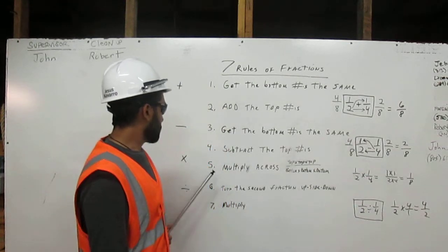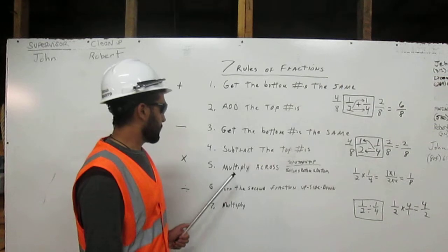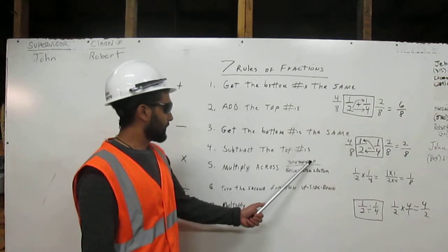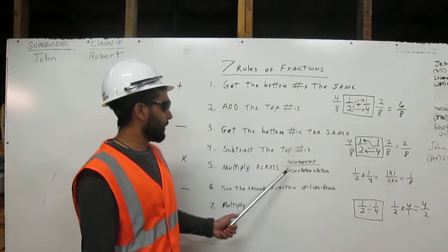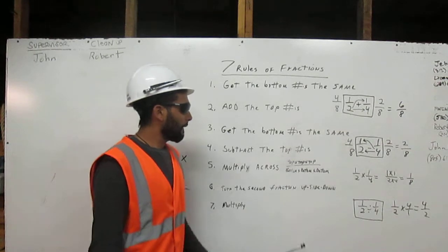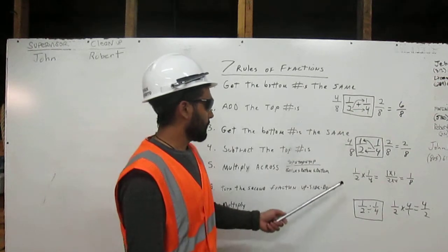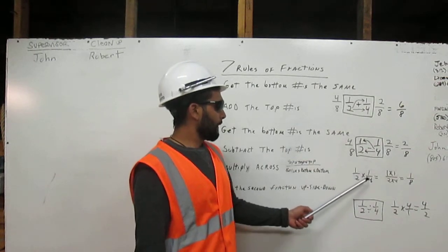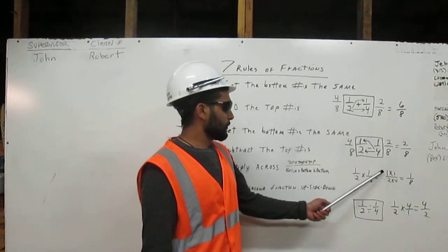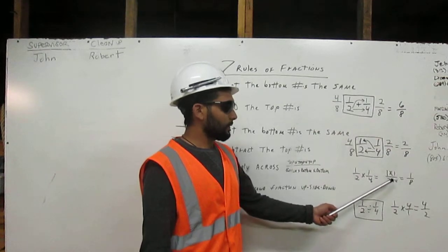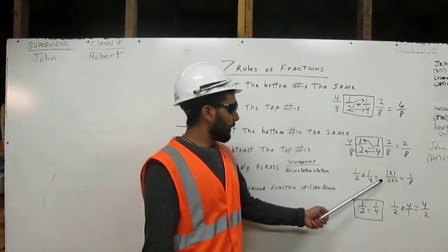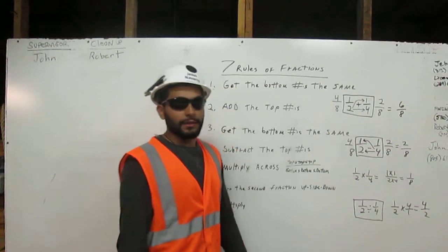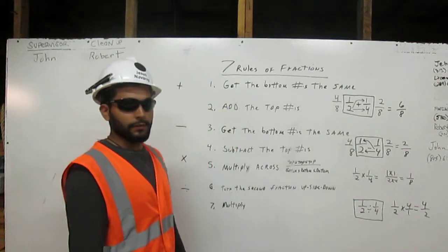And to multiply fractions, we multiply across. Top times top times top over bottom times bottom times bottom. In our example here, we have one-half times one-fourth. That's going to equal one times one over two times four. And our answer is one over eight. And that's how we multiply fractions.